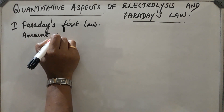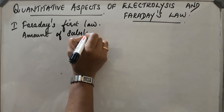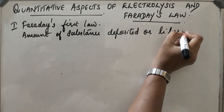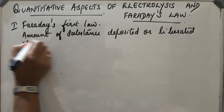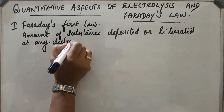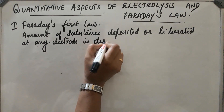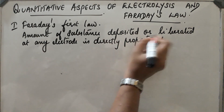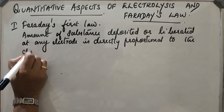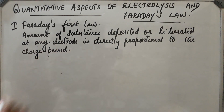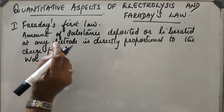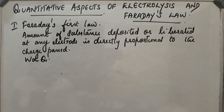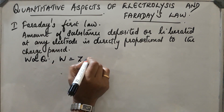The amount of substance deposited or liberated at any electrode is directly proportional to the charge passed through it. Let W be the amount of substance deposited or liberated, and Q be the charge passed. So, W is proportional to Q, or W equals some proportionality constant into Q.